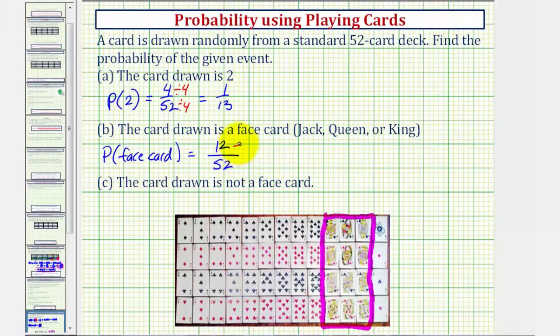This simplifies with a common factor of 4, giving us 3/13 as the exact probability. Now for our last probability, we want to find the probability that the card drawn is not a face card.